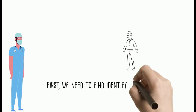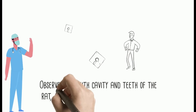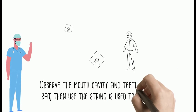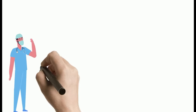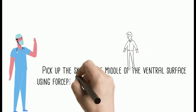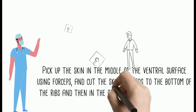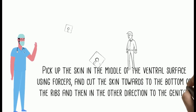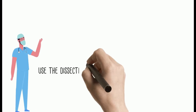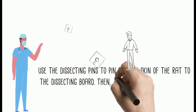First, identify all the external structures visible on the head, thorax, and abdomen of the rat. Next, observe the mouth cavity and teeth. Then use string to fasten the limbs of the rat, pick up the skin in the middle of the ventral surface using forceps, and cut the skin toward the bottom of the ribs and in the other direction to the genital openings. Use dissecting pins to pin out the skin to the dissecting board.